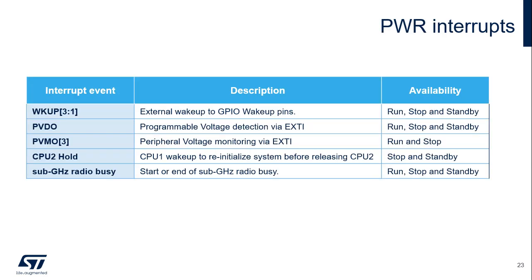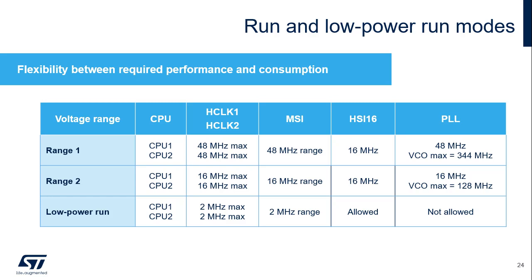Here is a summary of the PWR control-related interrupts. The Run mode, thanks to voltage scaling, and the Low-power Run modes, offer flexibility between required performance and consumption. In Run mode range 1, the system clock is limited to 48 MHz, and the internal and external oscillators and the PLL can be used. In Run mode range 2, the system clock is limited to 16 MHz, and the PLL can be used but must be limited to 16 MHz. In Low-power Run mode, the system clock must be limited to 2 MHz and the PLL cannot be used.